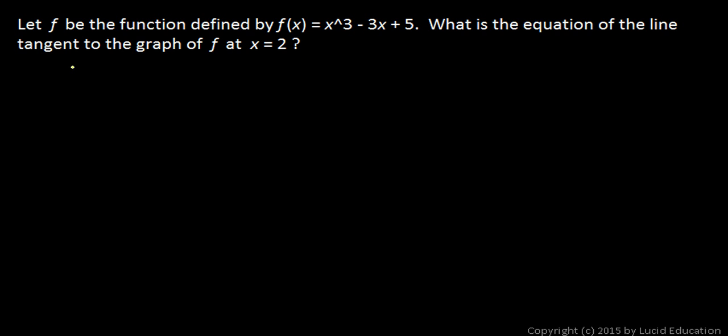So let's find f(2). We find that just by plugging in 2 for x. So that's 2³ - 3·2 + 5, and that's 8 - 6 is 2, plus 5 is 7. So that's a point, the point (2, 7).